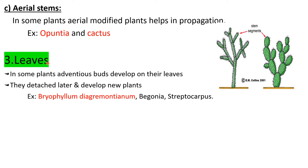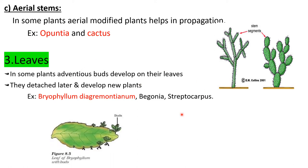Another important part of plants participating in vegetative reproduction is leaves. In some plants, adventitious buds develop on their leaves. The best examples are bryophyllum, begonia, and streptocarpus. On the edges of the bryophyllum leaf, so many buds are formed. When these buds fall on the soil, by taking help of the soil, they will give rise to new bryophyllum plants.